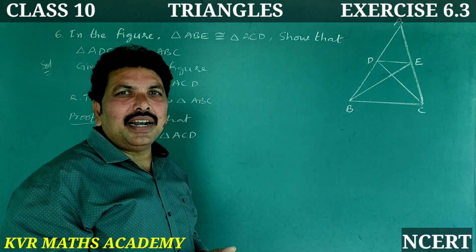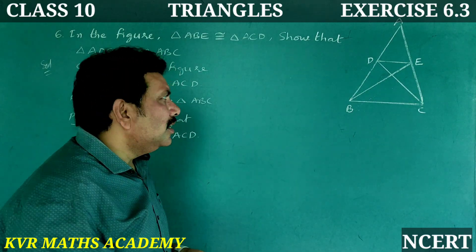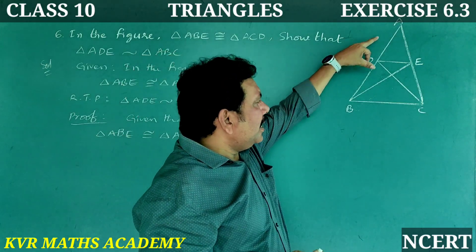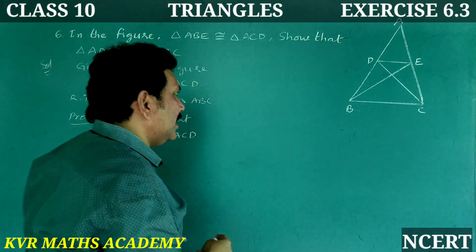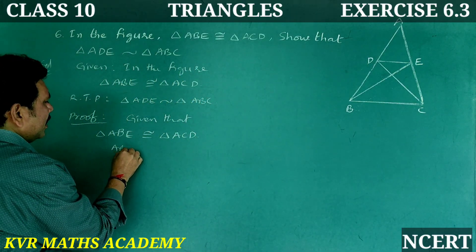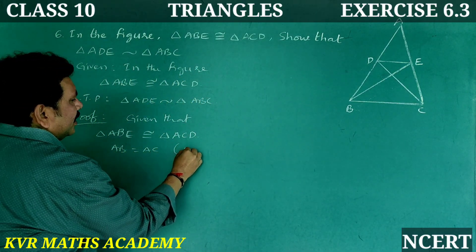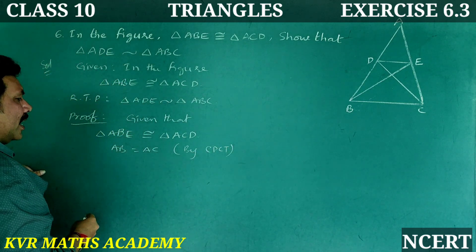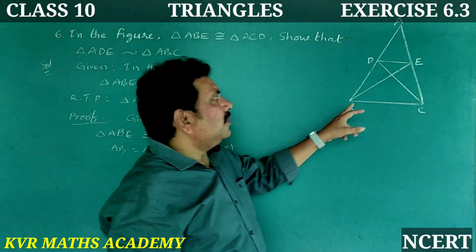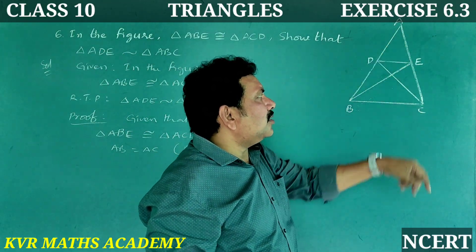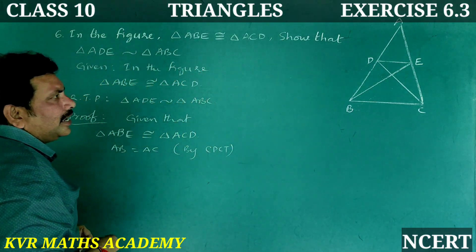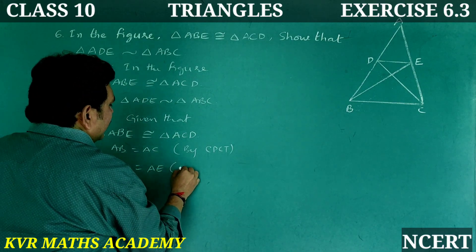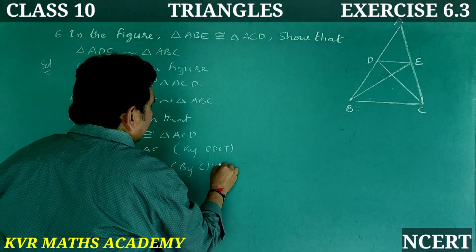So, if two triangles are congruent, then AB is equal to AC by CPCT — corresponding parts of congruent triangles. Similarly, AD is also equal to AE, also by CPCT. This gives us equation 1 and equation 2.